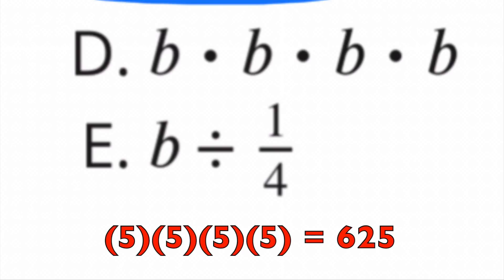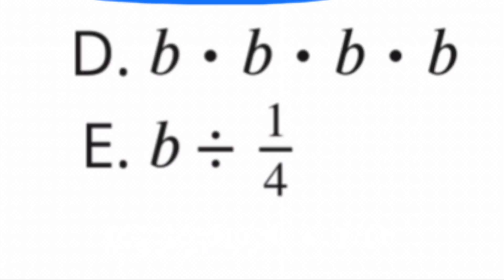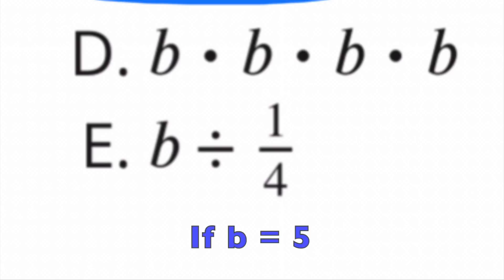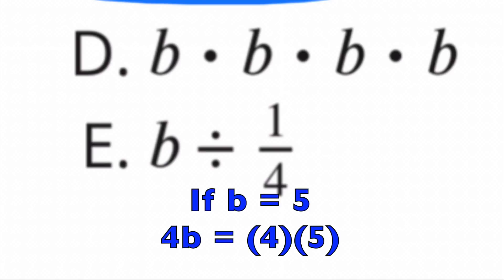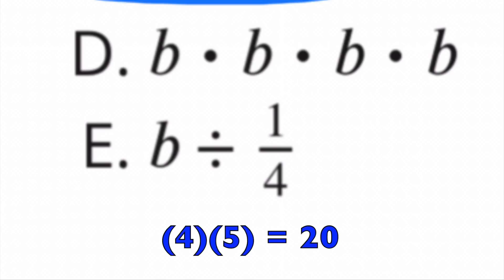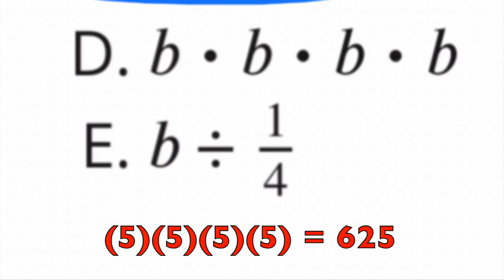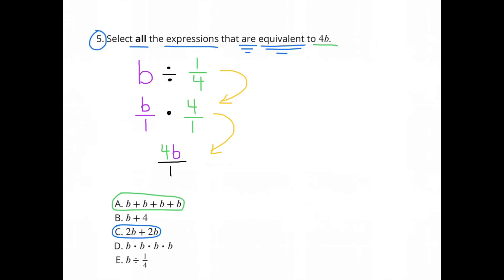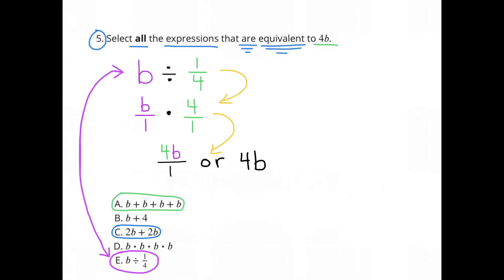For example, if B were 5, then 4 times B would be 4 times 5, which is 20. But 5 times 5 times 5 times 5 is not 20, so option D does not work. Option E, B divided by one-fourth, is the same as B times 4, because dividing by a fraction means multiplying by its reciprocal. So B times 4 equals 4B, and option E works. The answers are A, C, and E.